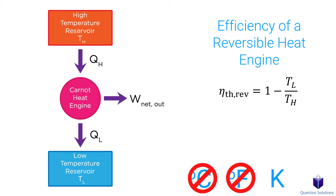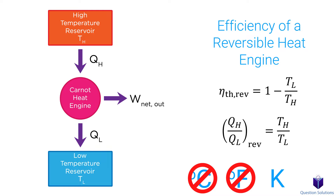You should note that TL and TH must be in Kelvin for this equation to work, because they are absolute temperatures. Do not use Celsius or Fahrenheit when solving problems, or you will end up with incorrect answers. A relationship between the Carnot efficiency equation and the normal efficiency equation can also be written for reversible heat engines — again, values must be in Kelvin.